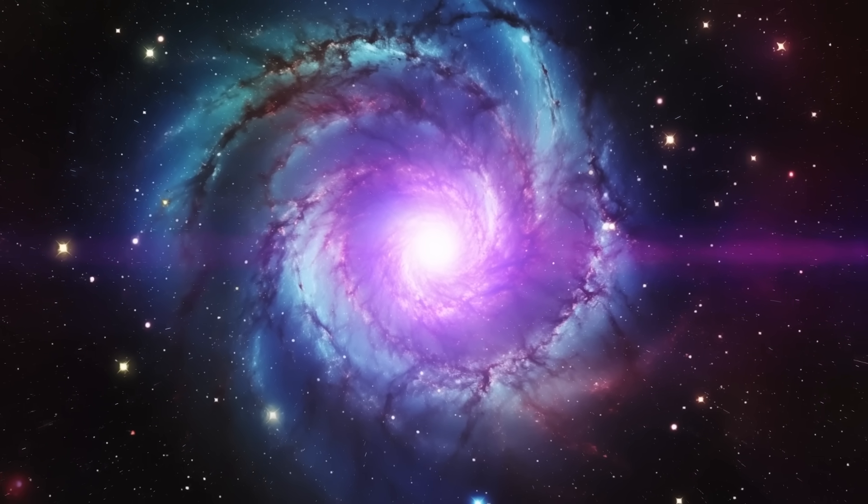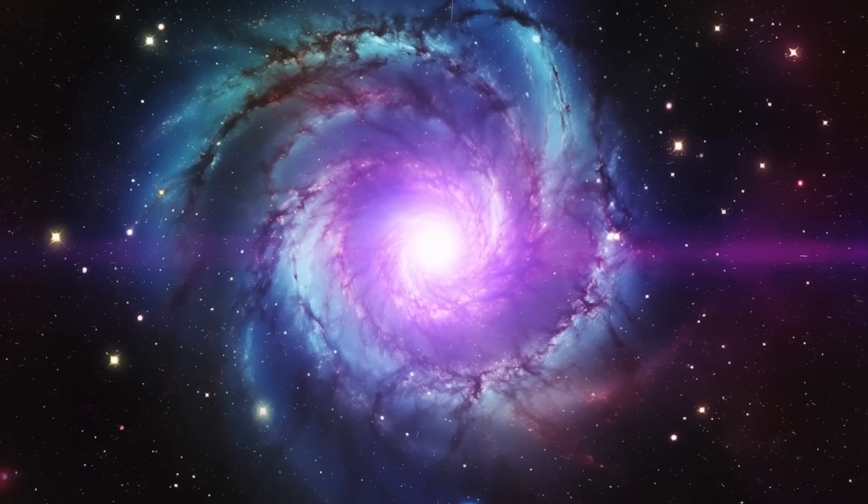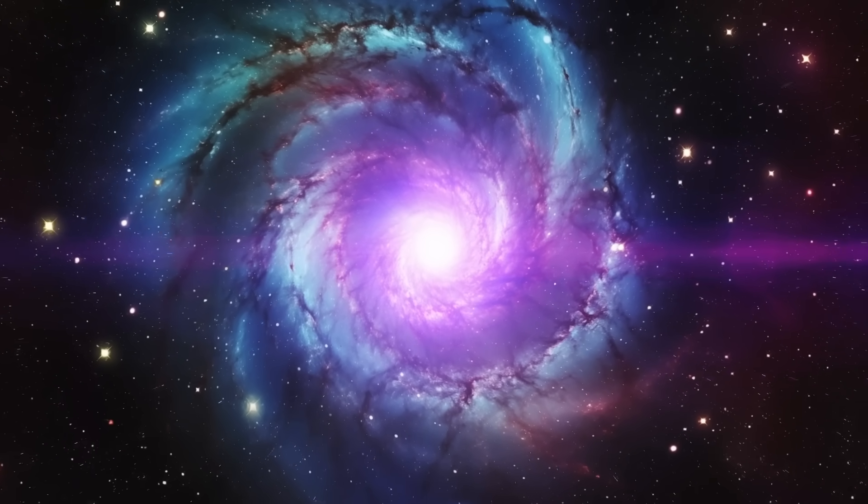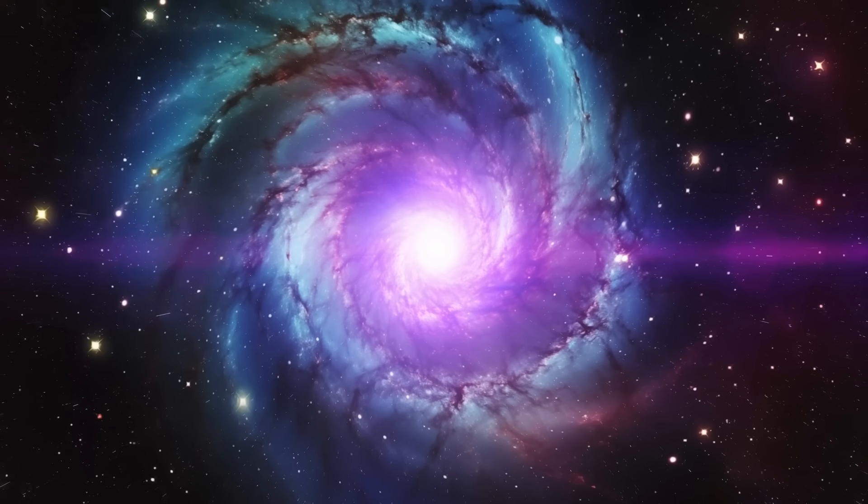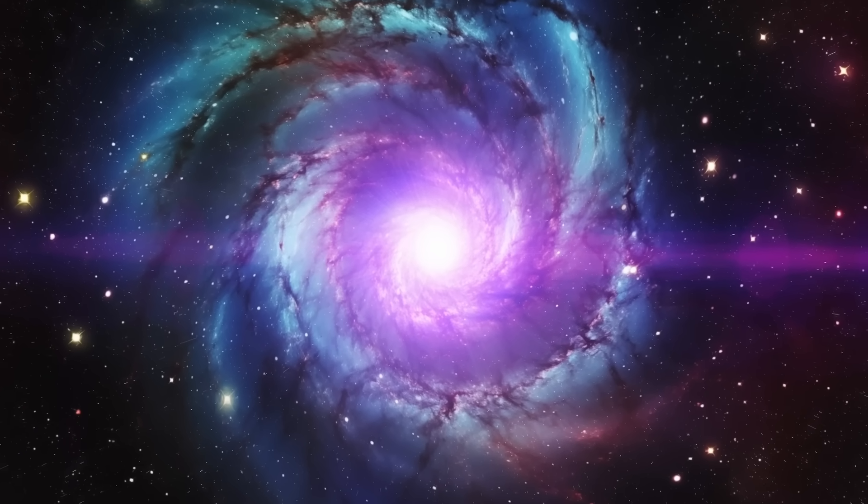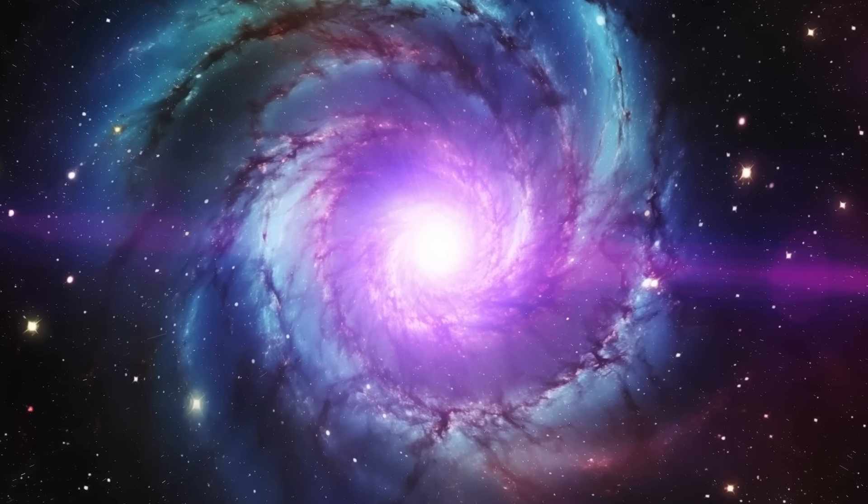Many galaxies, like our own Milky Way, have a spiraled shape with arms winding around a central bulge. These spirals form because the galaxies rotate and the arms trail behind.